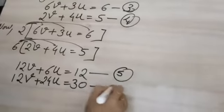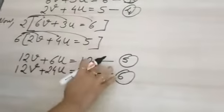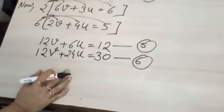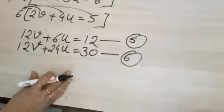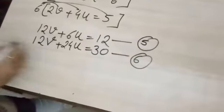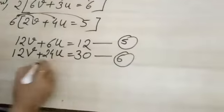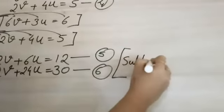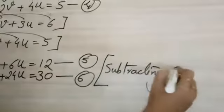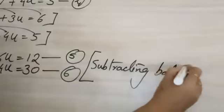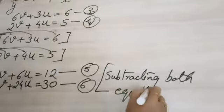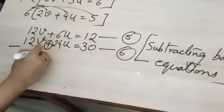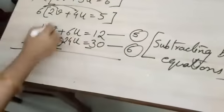Now variables are same, so we can subtract the equations. Subtracting both the equations, equation 5 and 6. We have decided we will subtract, signs will change.